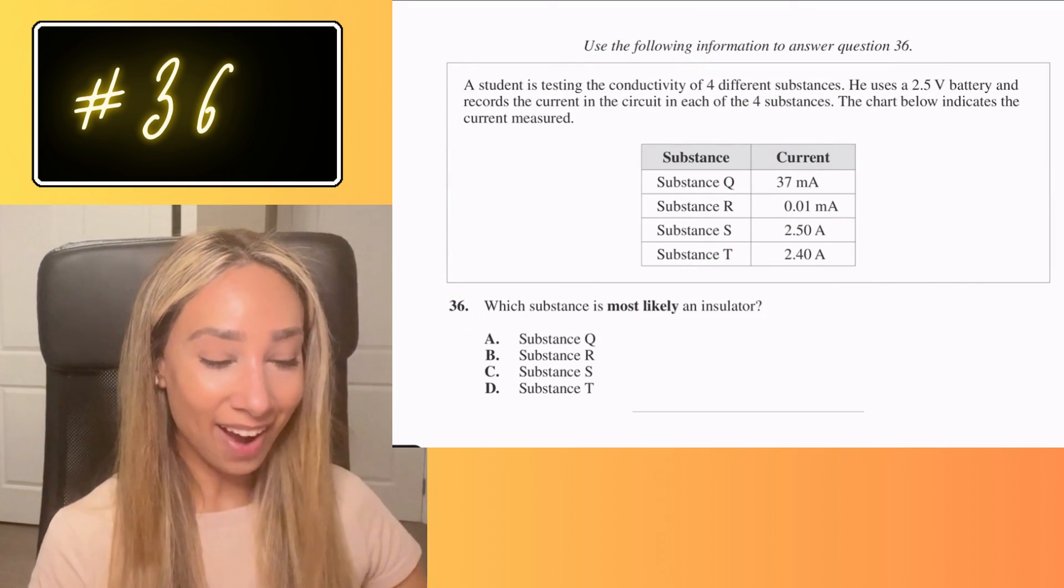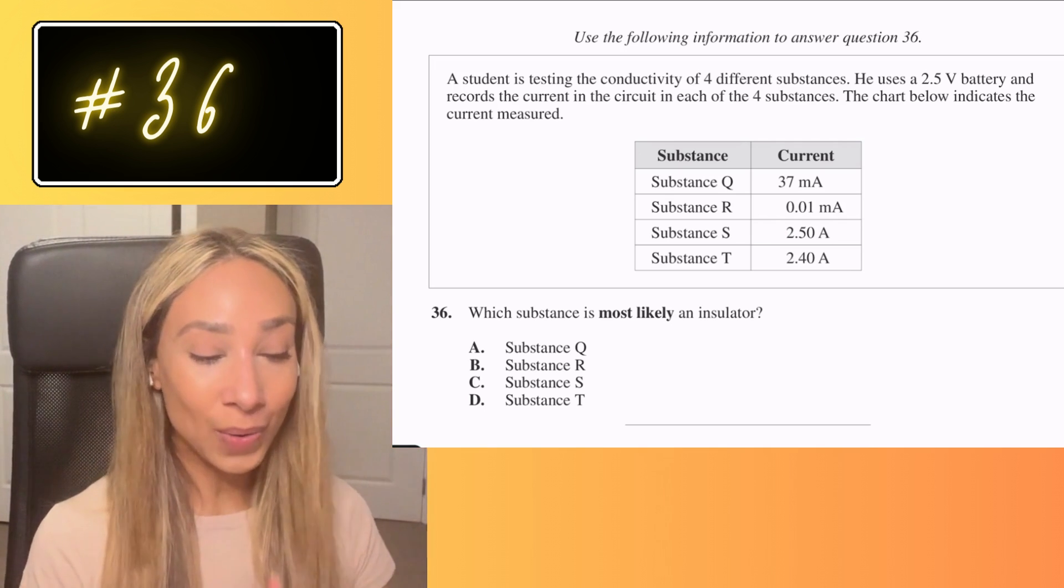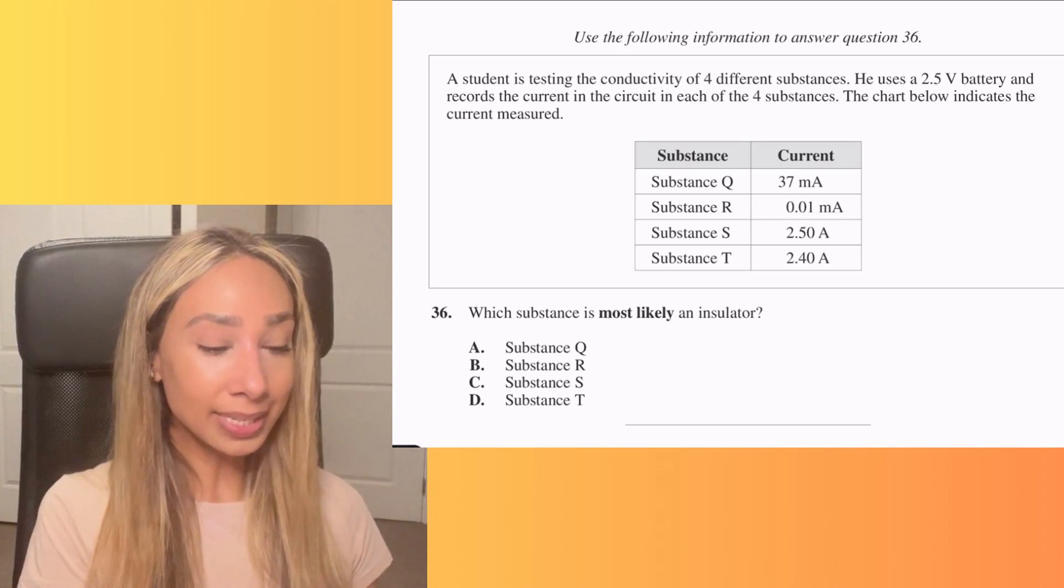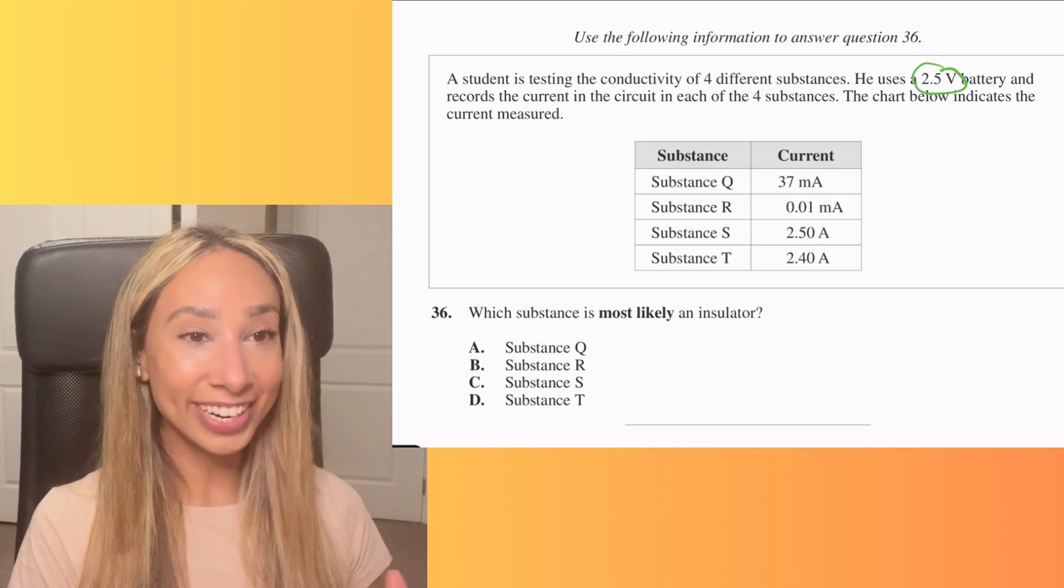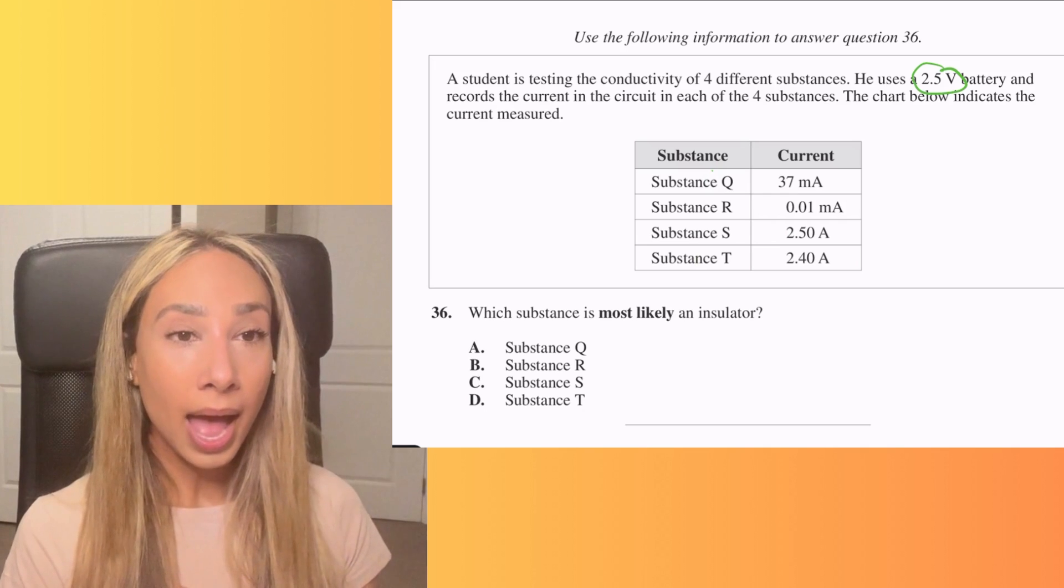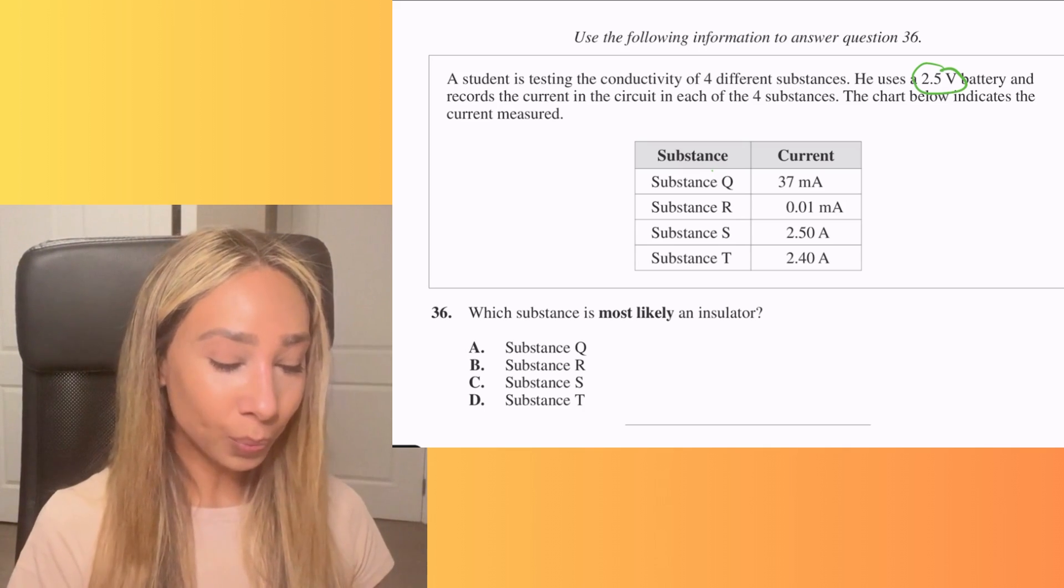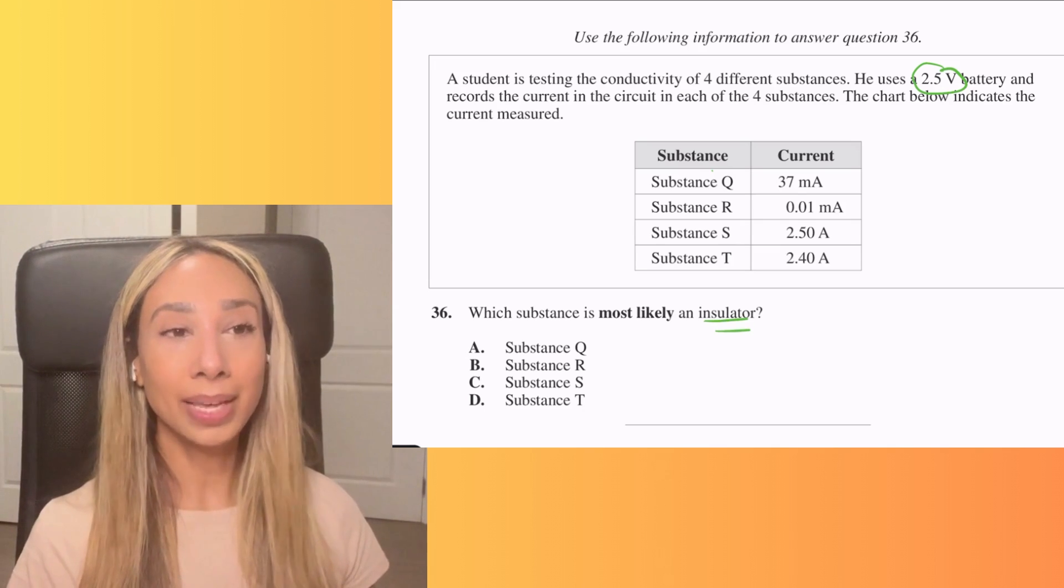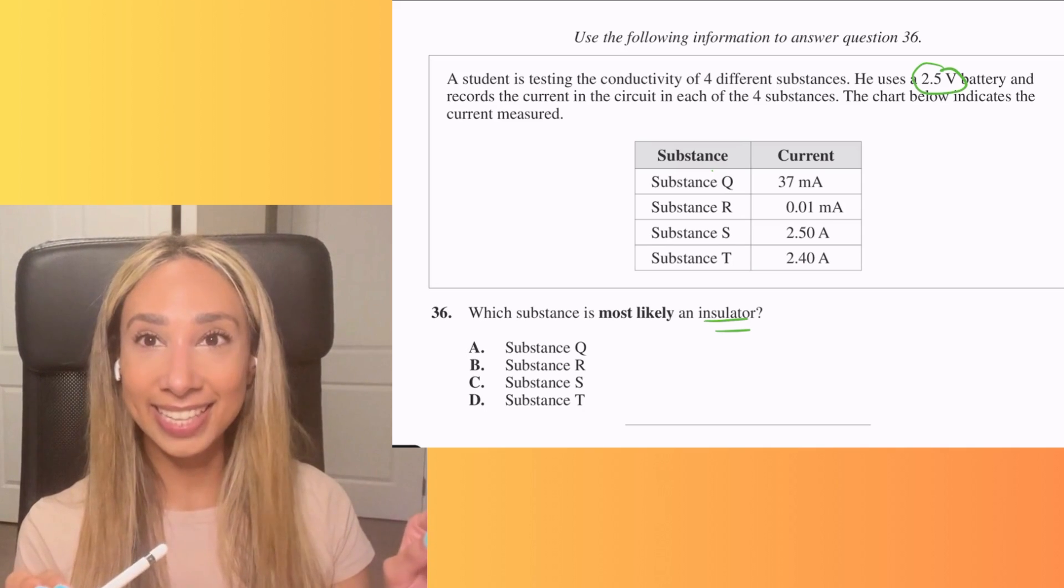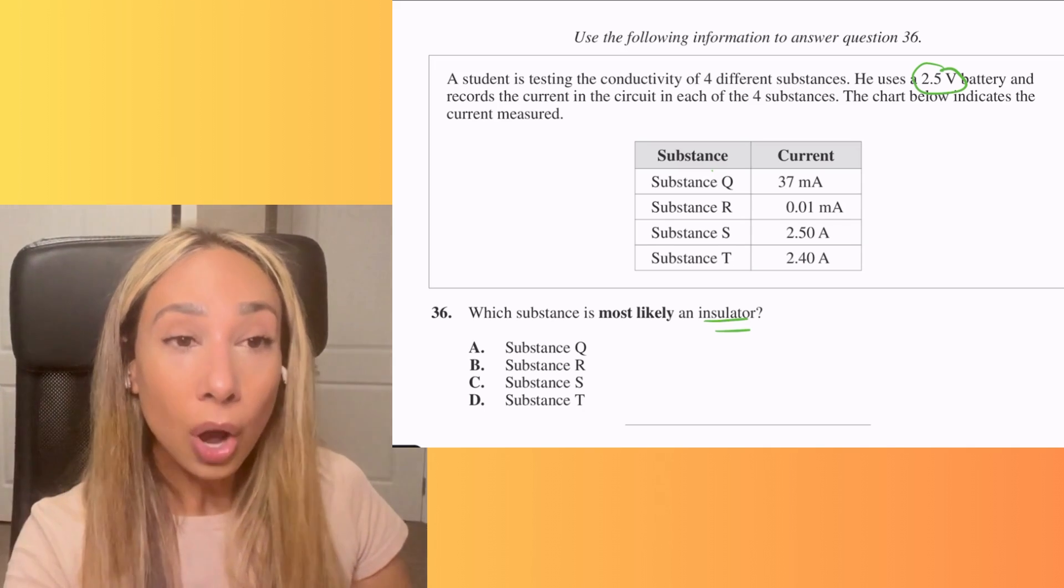Number 36. So this question at first glance kind of looks like you have to do some math here because you've got some numbers here, but for this question, you actually don't. So let me go ahead and read it and then let's chat about it. So a student is testing the conductivity of four different substances. He uses a 2.5 volt battery and records the current in the circuit in each of the four substances. So there's our four substances. The chart below indicates the current measured, which substance is most likely an insulator.